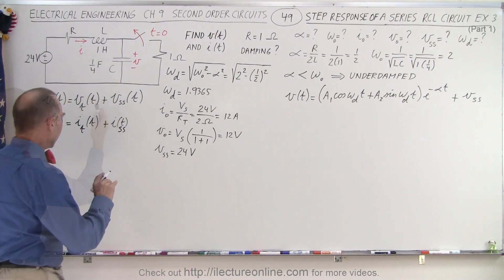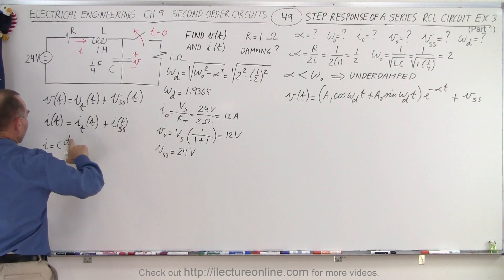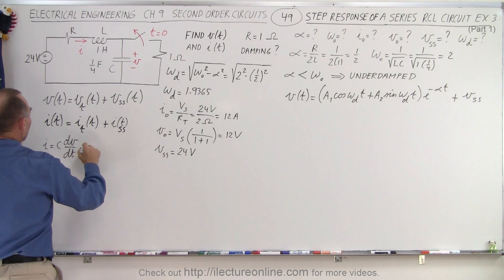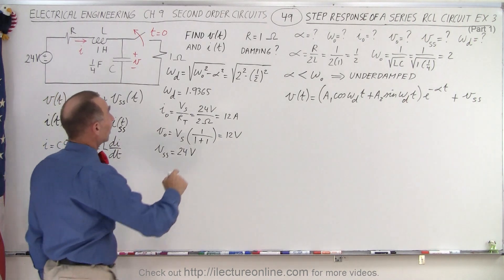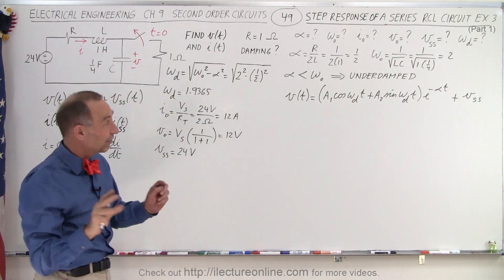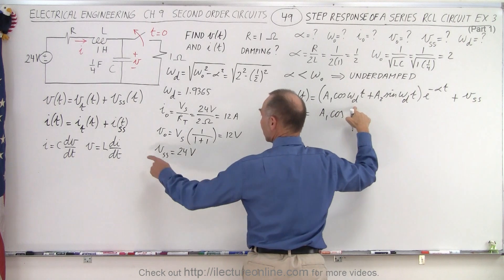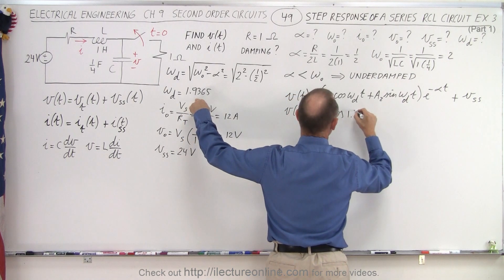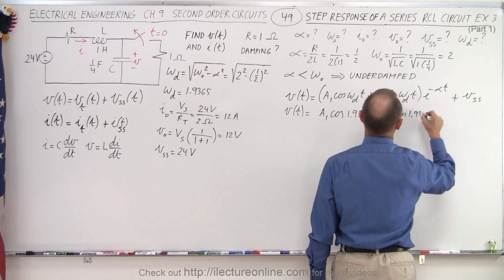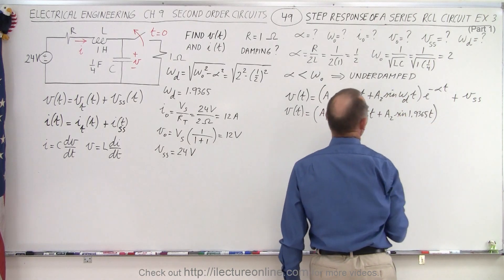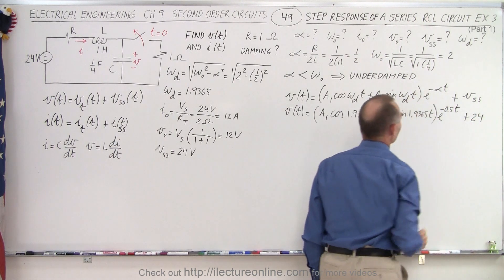Now we have everything we need. Two useful equations: current equals capacitance times dv/dt, and voltage across the inductor equals L times di/dt. Writing out the full equation with known values: V(t) equals A1 times cosine(1.9365t) plus A2 times sine(1.9365t), all multiplied by e to the minus 0.5t, plus 24 volts for the steady-state voltage.